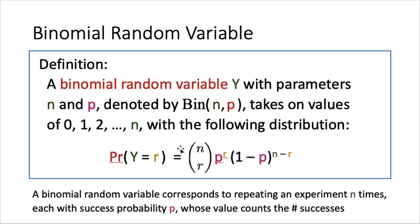Similarly, when r equals n, we need all experiments to be successful, and that happens with probability p to the power n, which also agrees with the formula. For a general value of r, the chance that the number of successes equals r means that, out of all n experiments, we need exactly r of them to be successful.